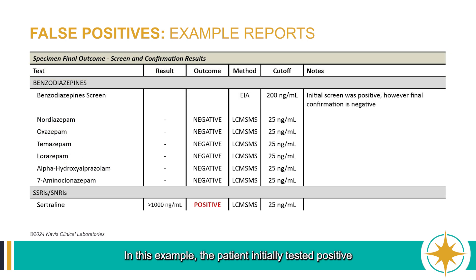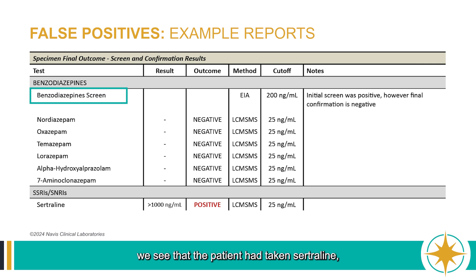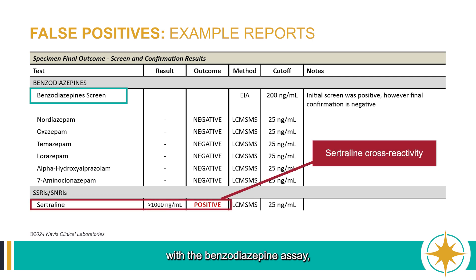In this example, the patient initially tested positive for benzodiazepines. After the final confirmation test, we see that the patient had taken sertraline, which had cross-reacted with the benzodiazepine assay, causing the false positive.